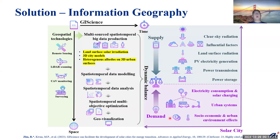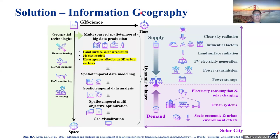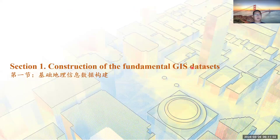Getting back to multi-sourced spatial temporal big data, we usually consider land surface solar radiation, which conclusively determines the light sources during the daytime. We need 3D city models to build the shading effects from surrounding buildings, and we should also consider heterogeneous albedos — albedo means reflection ratio on a surface — on 3D urban surfaces. So let's go to the first section: construction of the fundamental GIS datasets.